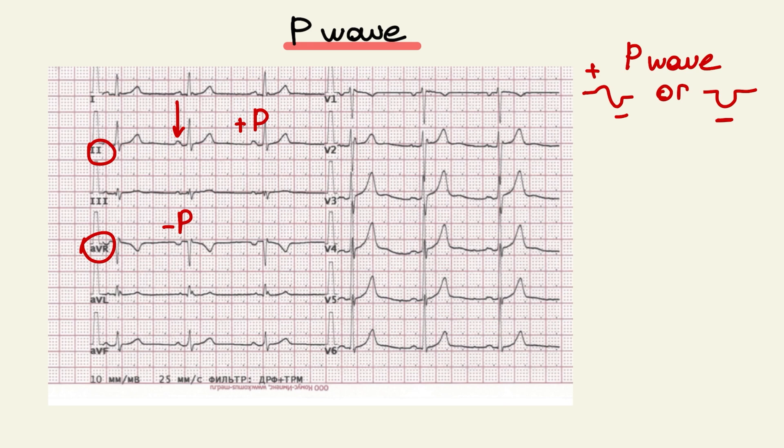P wave can be biphasic or negative at lead 3, AVL and V1 like a variant of norm. Normal duration is less than or equal to 0.1 seconds and amplitude is from 1.5 to 2.5 millimeters.